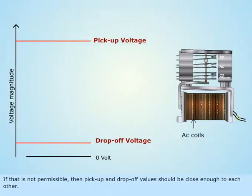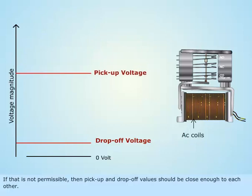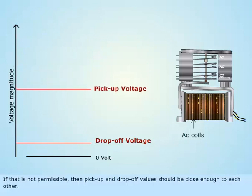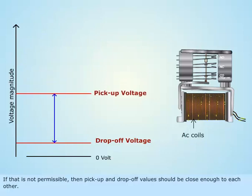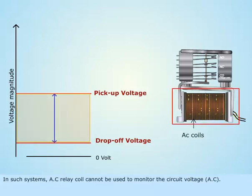If that is not permissible, then pickup and drop-off values should be close enough to each other. In such systems, an AC relay coil cannot be used to monitor the circuit voltage.